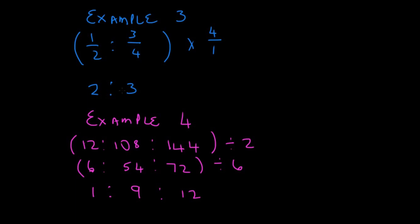I picked the number 2. And I said 12 divided by 2 is 6. 108 divided by 2 is 54. And 144 divided by 2 is 72. But you can see that these numbers are not in its simplest form. Why? Because there is still a common factor. There is still a common multiple.